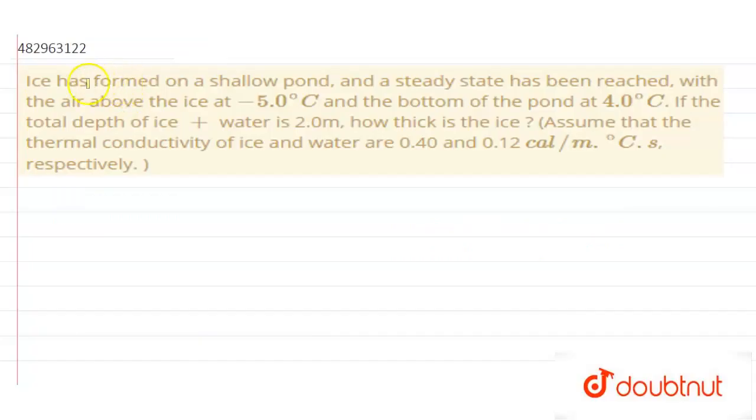In this question, we have given that ice has formed on a shallow pond and a steady state has been reached. The air above the ice is at minus 5 degrees Celsius and the bottom of the pond is at 4 degrees Celsius. If the total depth is 2 meters, how thick is the ice?